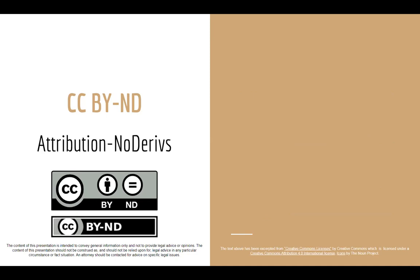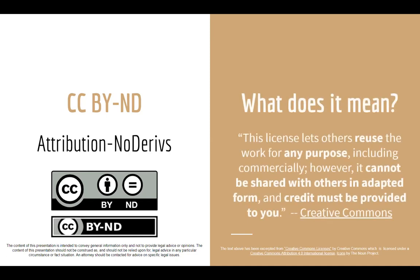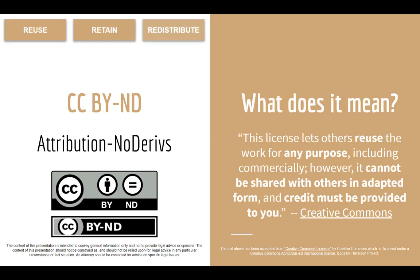The CC BY-ND, or Attribution NoDerivatives license, allows you to reuse, retain, and redistribute material for commercial or non-commercial purposes, as long as you credit the original work and share the material in its original form. It does not allow you to remix, revise, or modify the material. Returning to the music scenario: if that circle of fifths handout had a CC BY-ND license, you could make copies and distribute it to students in both your college course and your private lessons — as long as you didn't modify the handout and provided credit to the original creator.